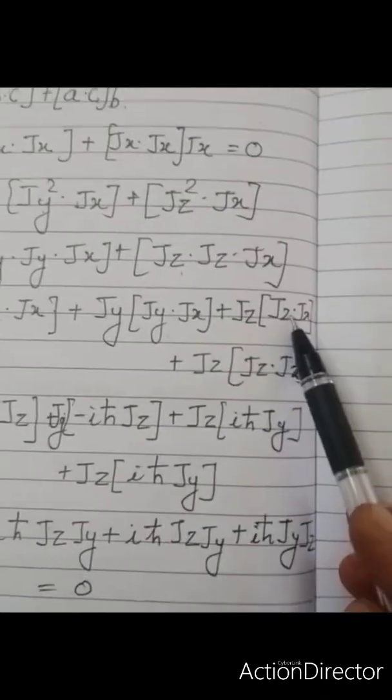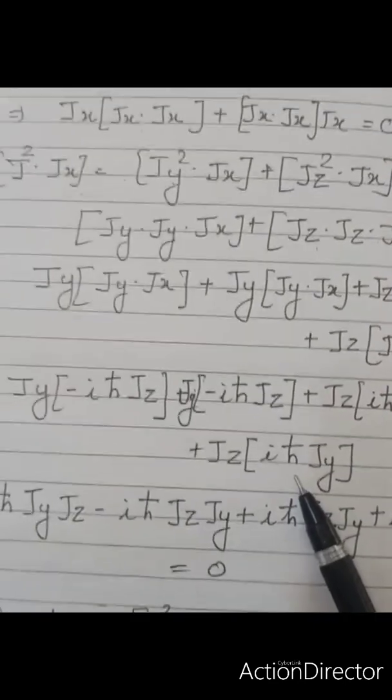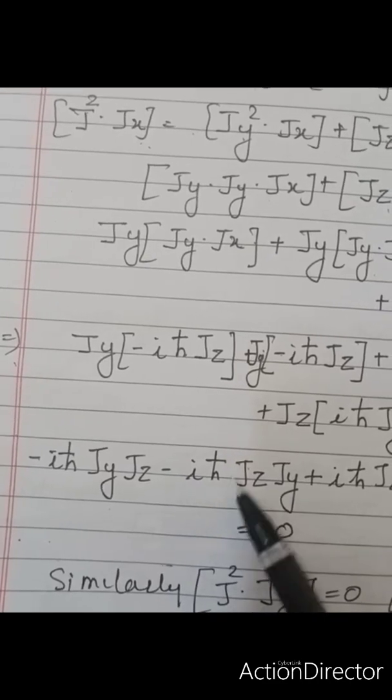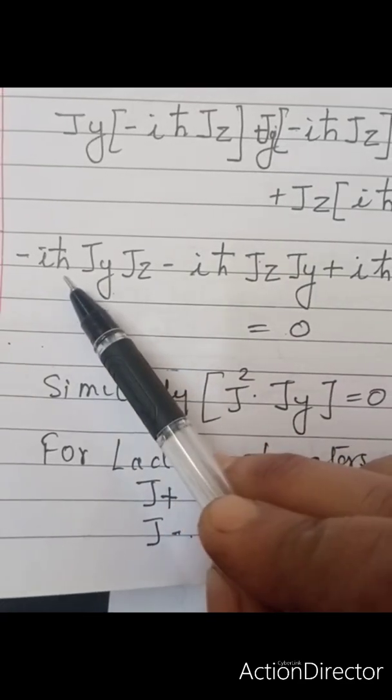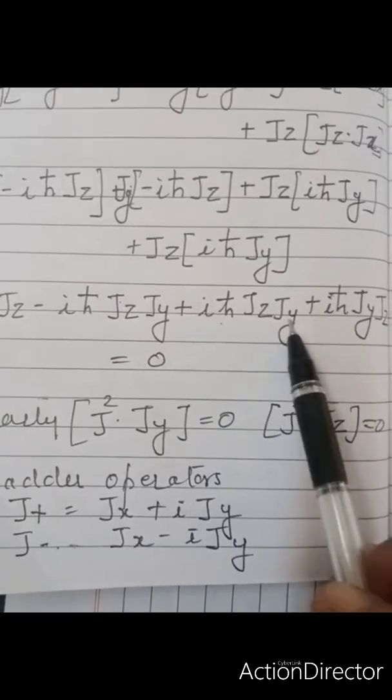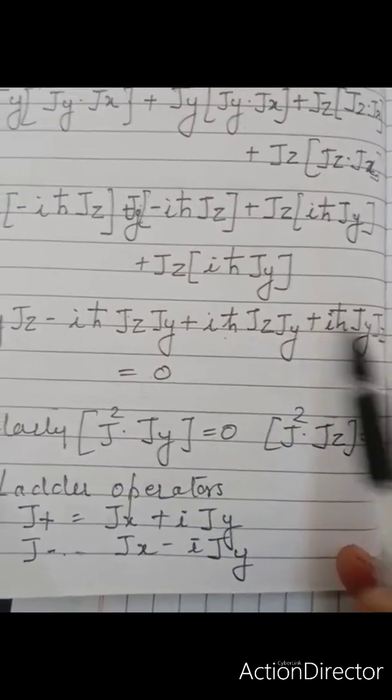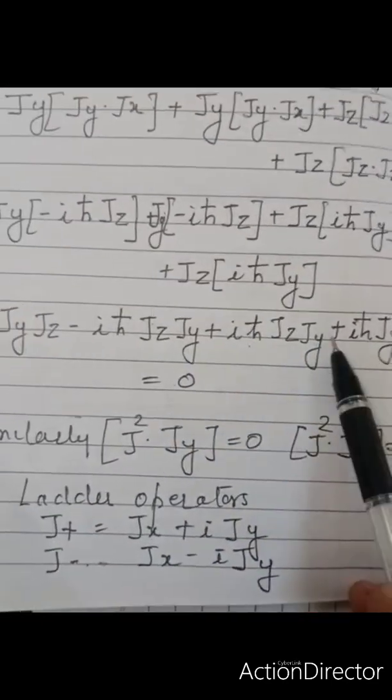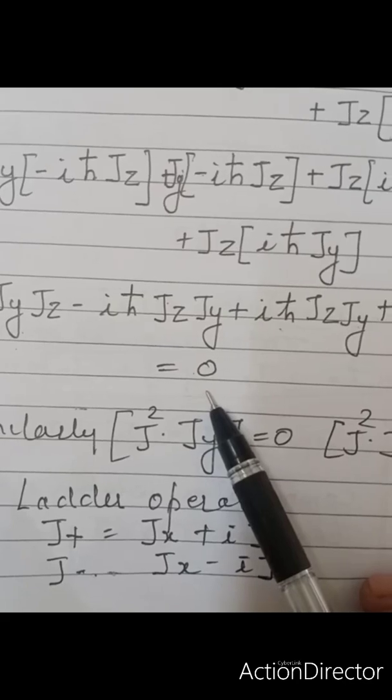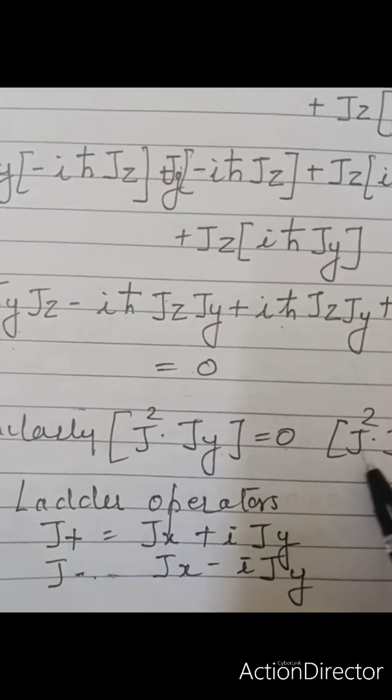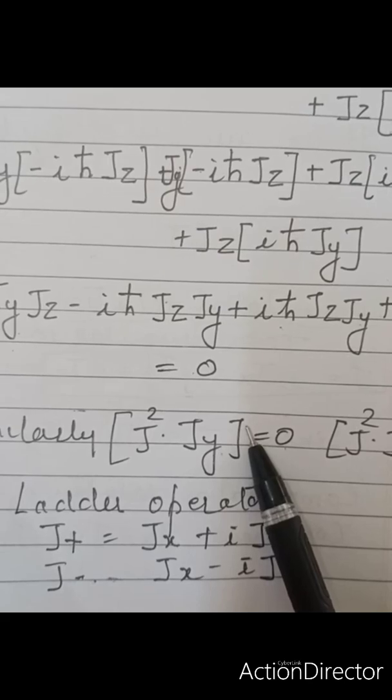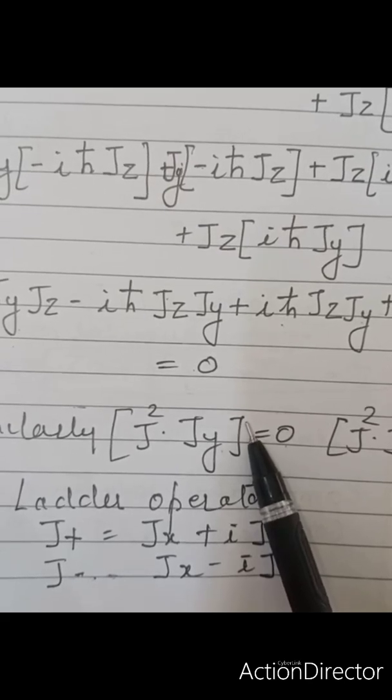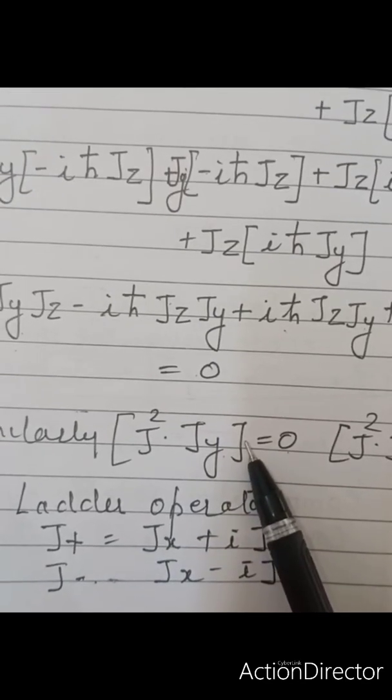And again, after solving it, you will see maximum portion is getting cancelled. You can see here minus iℏ cut JY JZ plus iℏ cut JZ JY plus iℏ cut JY JZ minus iℏ cut JZ JY. All of them will get cancelled. You will be left with 0. So you can say J square JY is also 0 and J square JZ is also 0. This is how you will be applying the commutation rules for the generalized angular momentum. You can apply the ladder operations also, which we will be doing in next session.